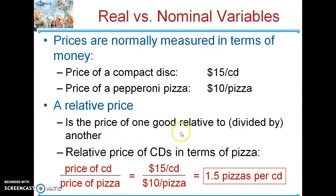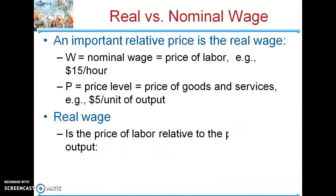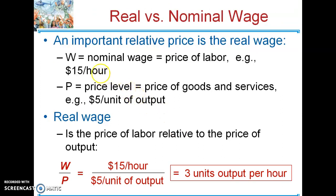Going into real versus nominal wage: your nominal wage is the money you get paid — the dollar amount — and the real wage is actually what you can purchase with that, in terms of a physical good or service. For example, if output is $5 — like a $5 shirt — and you make $15 an hour with shirts at $5, then your real wage is three shirts an hour. That's what you work for — actual goods and services, like X amount of food per hour or X amount of rent payment per hour.